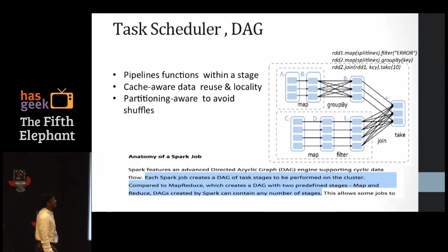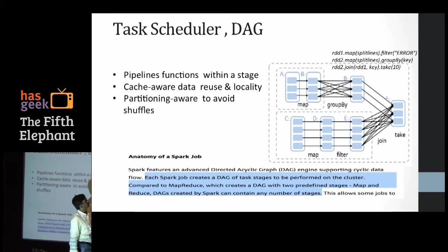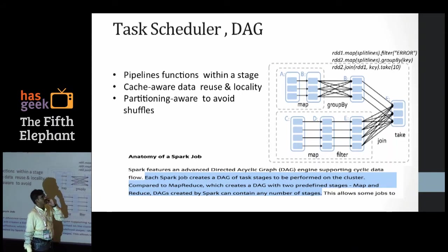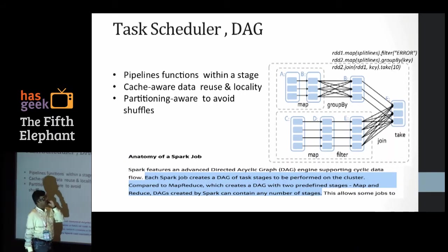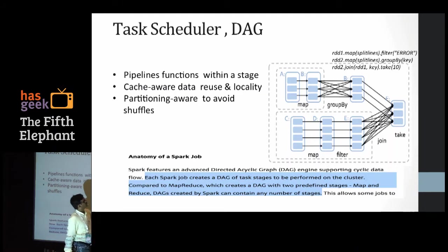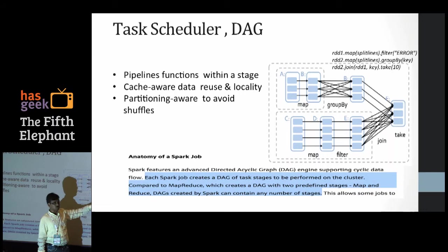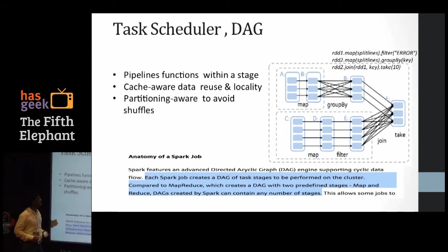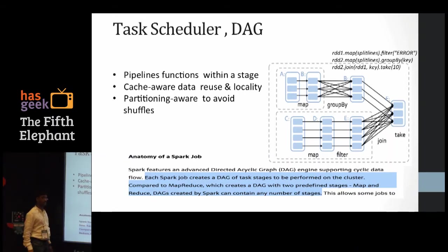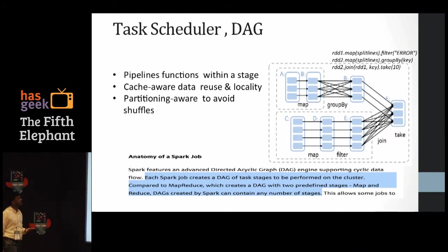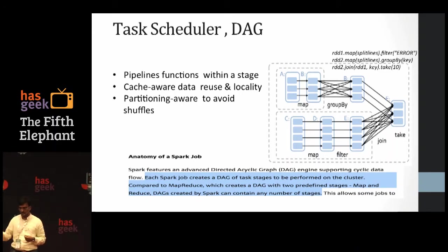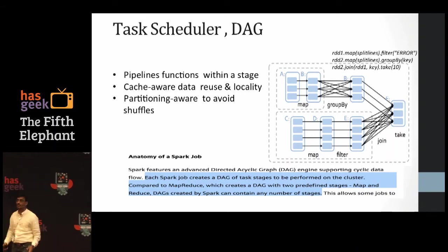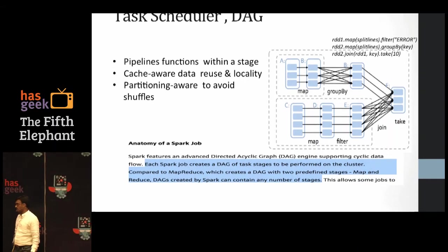Spark builds a DAG — Directed Acyclic Graph — of operations. For a simple word count job, the DAG breaks it into different stages. Operations that can run in parallel — like two independent map operations before a join — are identified by the DAG and executed separately, then joined. DAG characteristics include pipelining functions within stages, cache-awareness (scheduling tasks where data is already cached), partition awareness, and data locality — all enabling maximum parallelism.